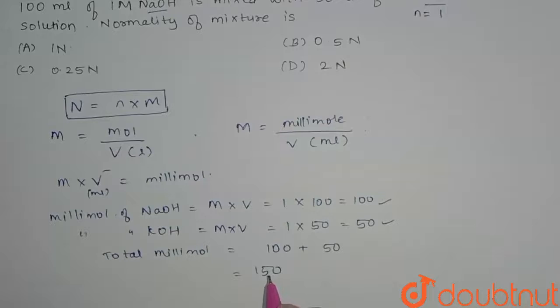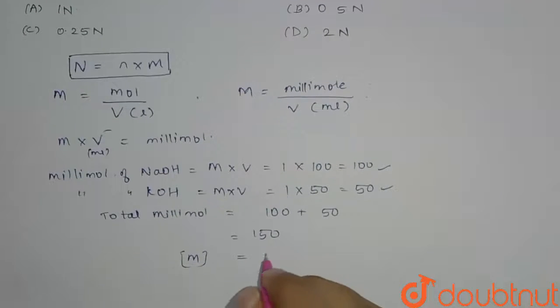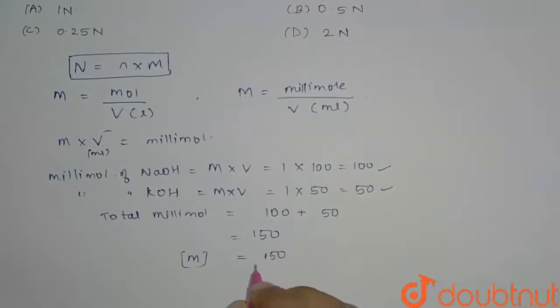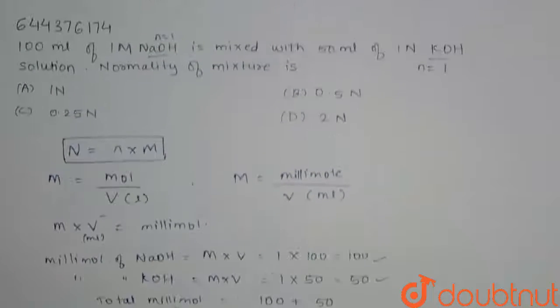Now our total millimole is 150. We can find here molarity. So our molarity is equal to 150 divided by our volume, that is 100 plus 50, equals 1. That is 150 divided by 150 equals 1. So here our molarity becomes 1.